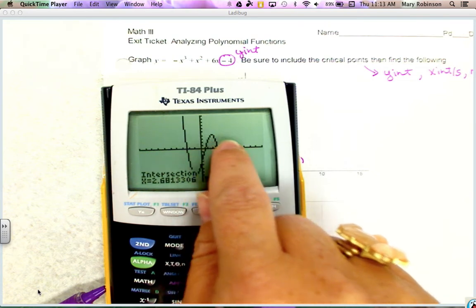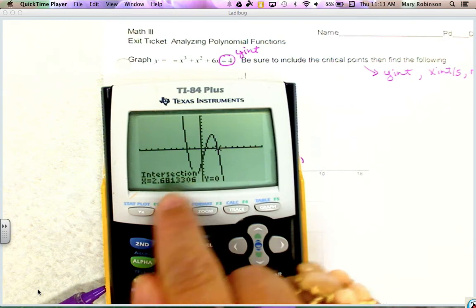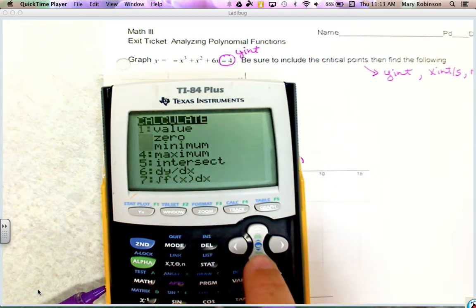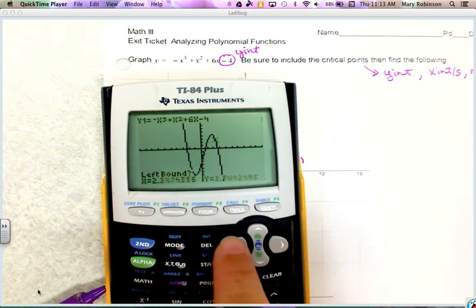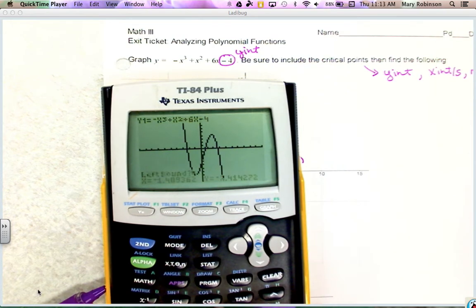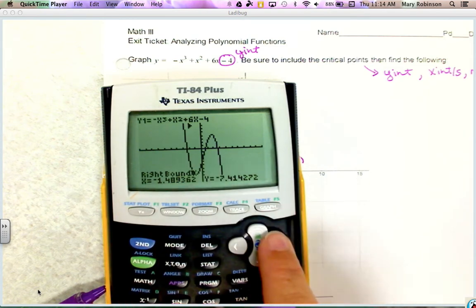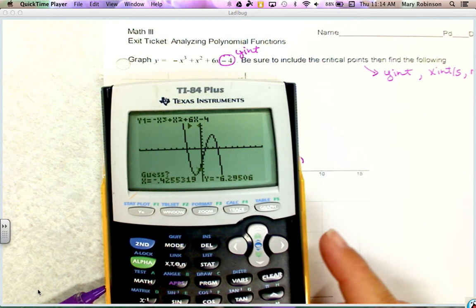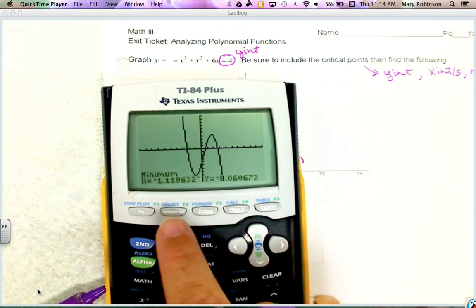To calculate min and maxes, we're going to do similar to how we found the intersection and press 2nd trace, but then choose minimum. It's going to ask us for our left bound, so I want to move this cursor to the left by pressing that left arrow. Right about there is my min, but I need to calculate the exact value. I'm going to move it slightly to the left and press enter to mark it. Notice there's an arrow up here that will mark it. Now it asks for right bound, so I'm going to move my cursor to the right and hit enter. So now it's marked my left and my right and it says guess - do you want the calculator to guess? Yes we do, so we press enter.